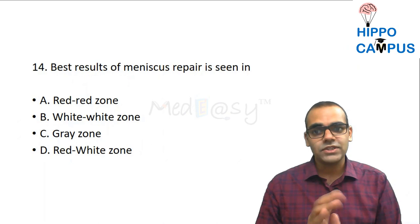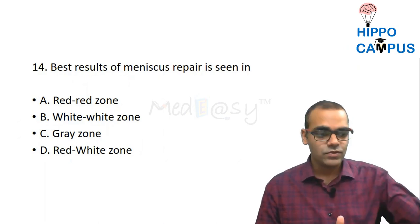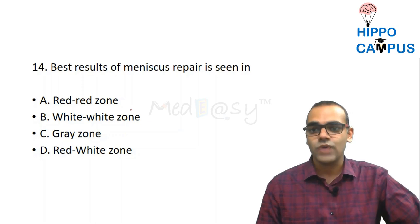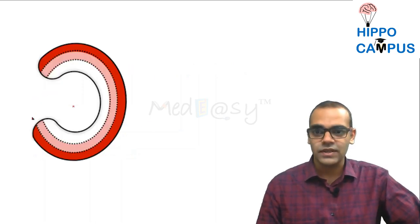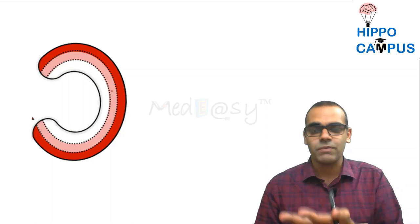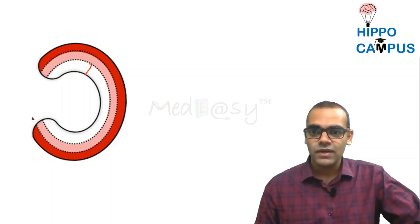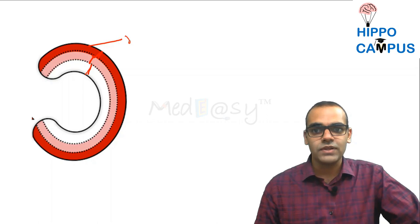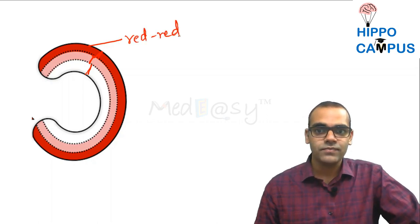Question 14: The best results of meniscus repair are seen in which zone — red-red, white-white, gray zone, or red-white zone? The answer is the red-red zone. The meniscus in cross-section is divided into three parts: inner one-third, middle one-third, and outer one-third. The outer one-third is the red-red zone because it has maximum vascularity.